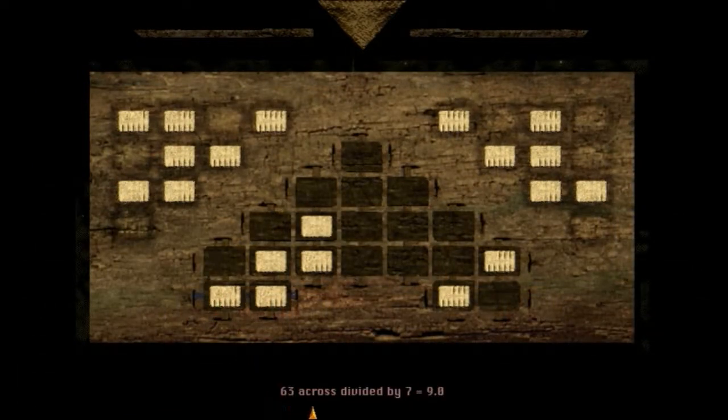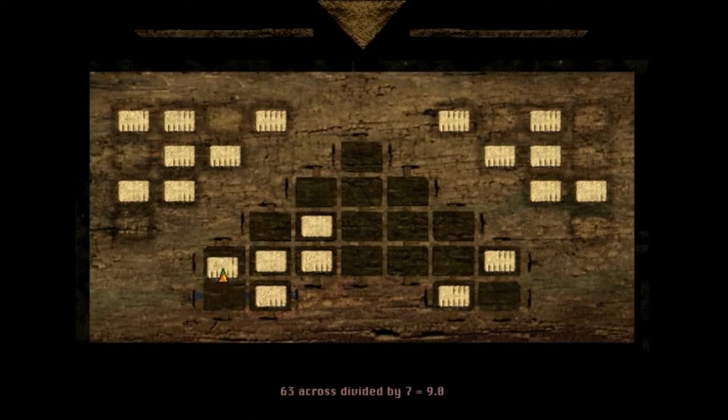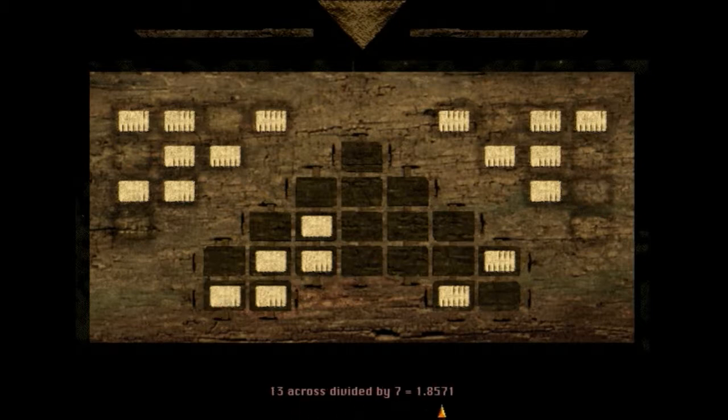At the bottom of the screen it tells you what the number is when you divide it by seven. I don't think this is too useful because the blue marker that locks in place will tell you whether it is or isn't divisible by seven. But if you didn't already know the goal of the puzzle, the fact that it's telling you to divide by seven will probably at least clue you in on that.